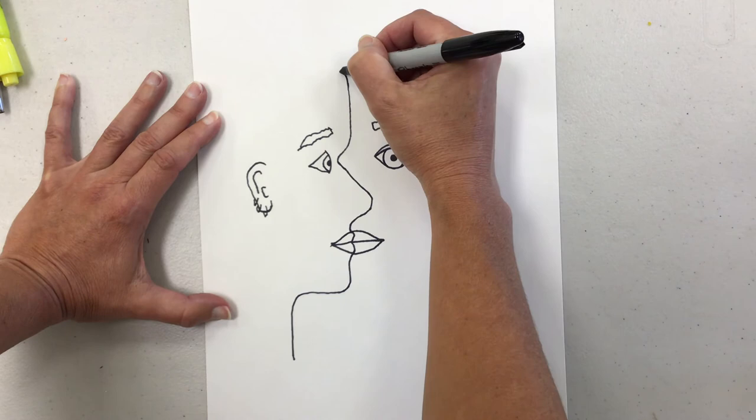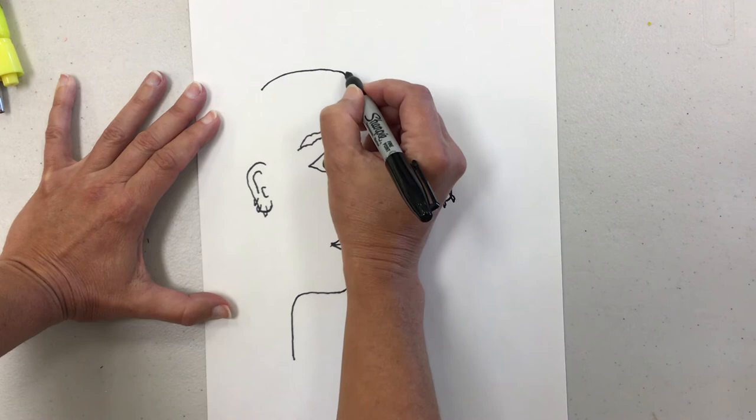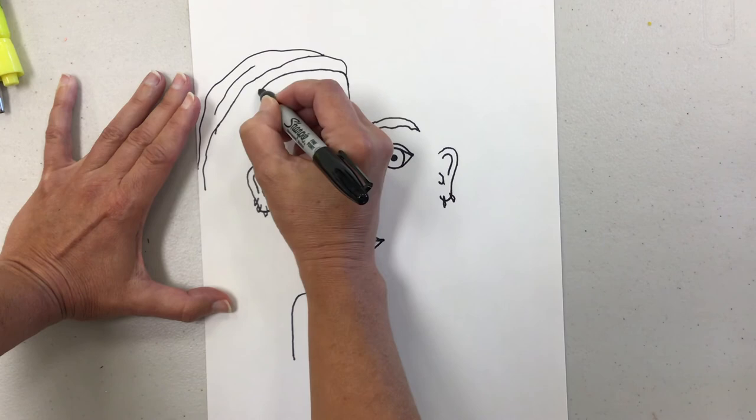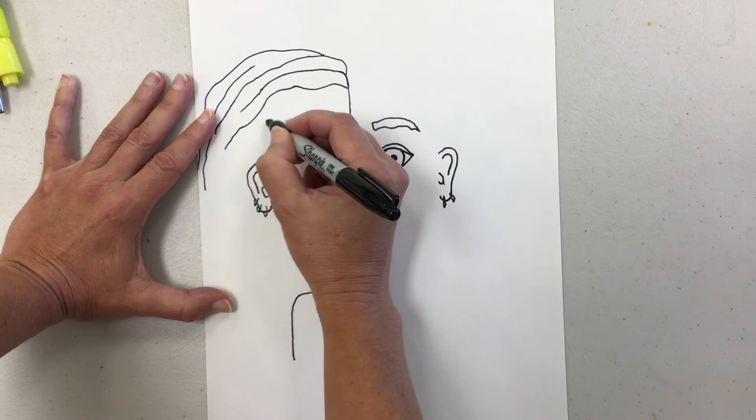So let's start up here. Got our forehead comes around. And this is kind of where hair would be. And my hair, I don't have bangs, so I'm just going to go like this. I can add more as I go, if I feel like I didn't quite love the line that it started off as. See that? I'm just kind of add it, add it as it goes.